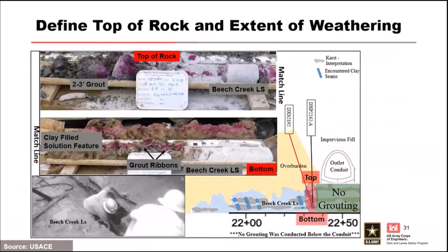What did we find out? With respect to top of rock, we found a very pinnacled and solutioned rock mass in that lower karst formation. At the top of rock, we encountered grout, which indicated we had voids and defects near the top of rock. We have clay-filled solution features and low stress zones, located very near to the outlet conduit. All these subsurface conditions were documented and summarized within the geotechnical document and plans and specifications and provided to the contractor.